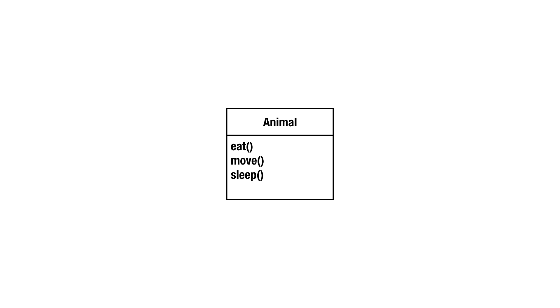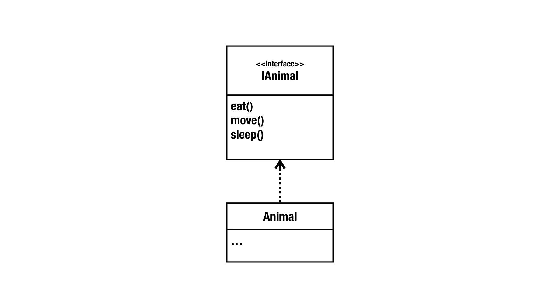The Interface Segregation Principle says we should not put the signatures of sleep, eat, and move all into one Animal interface, because we'd be constructing a large monolithic Animal. Instead, we could be creating interfaces for smaller roles and then giving all the necessary roles to an Animal instance.